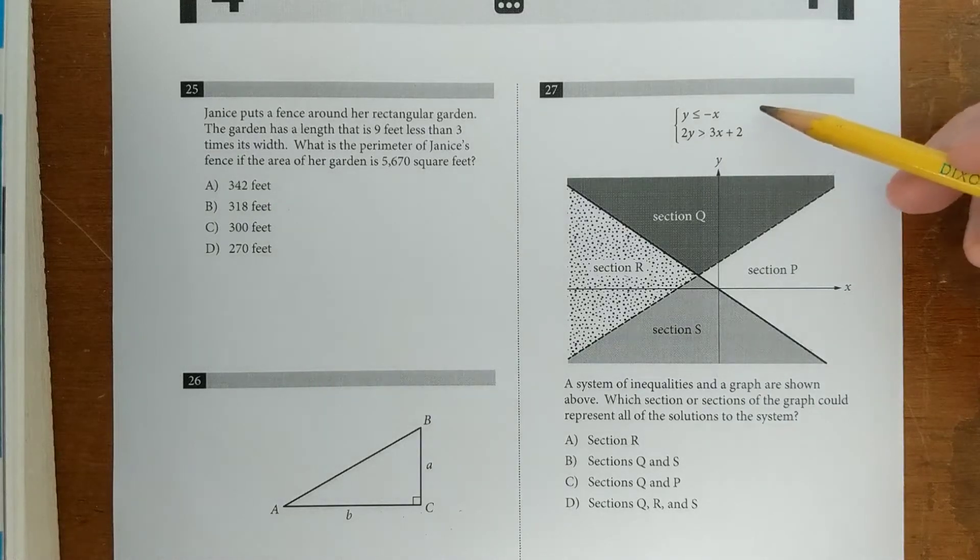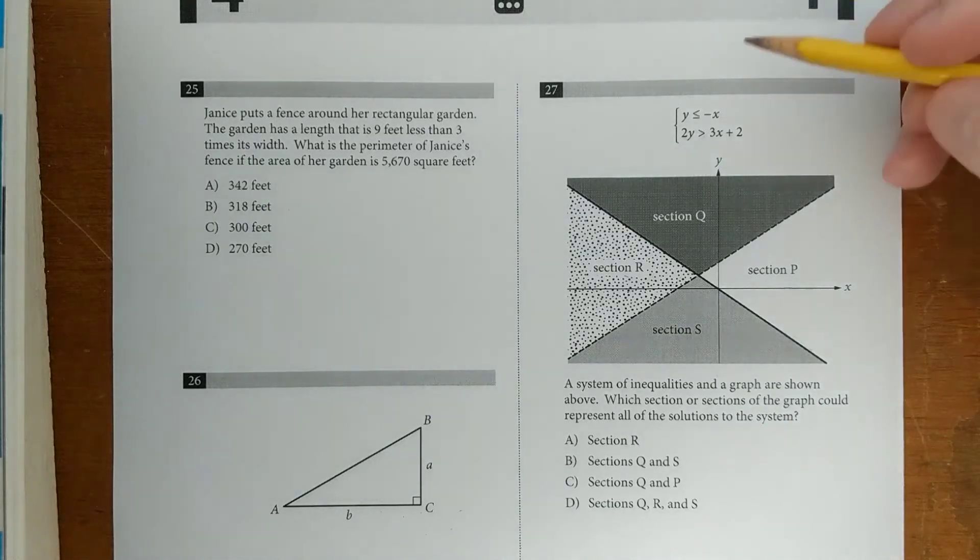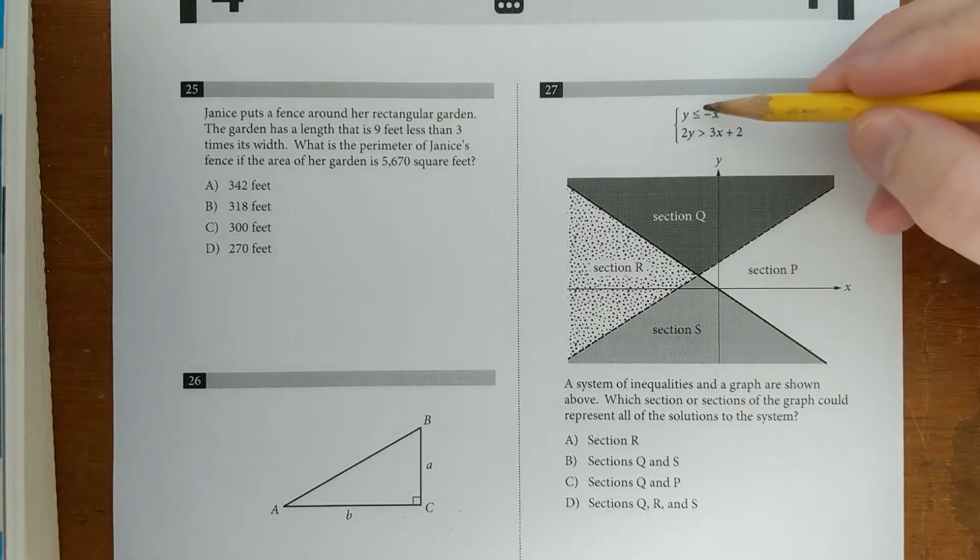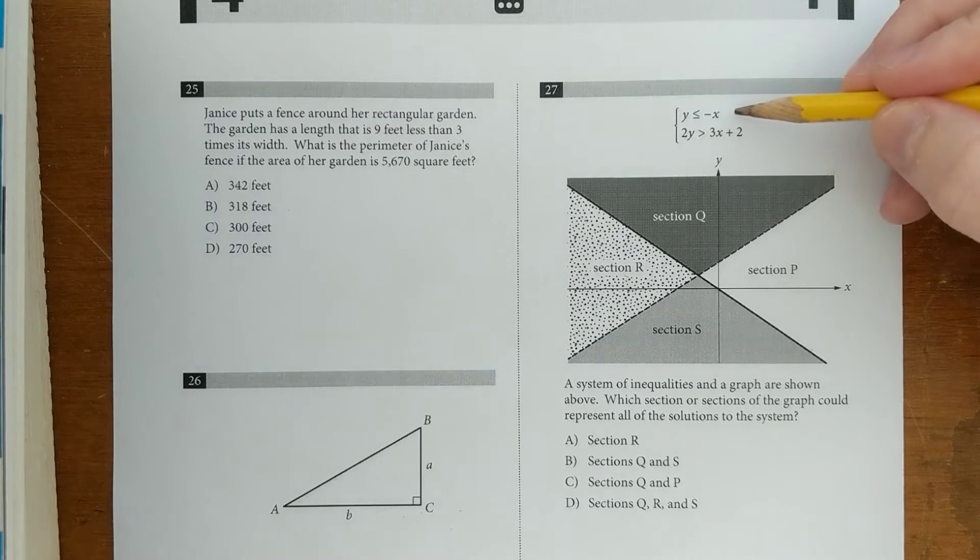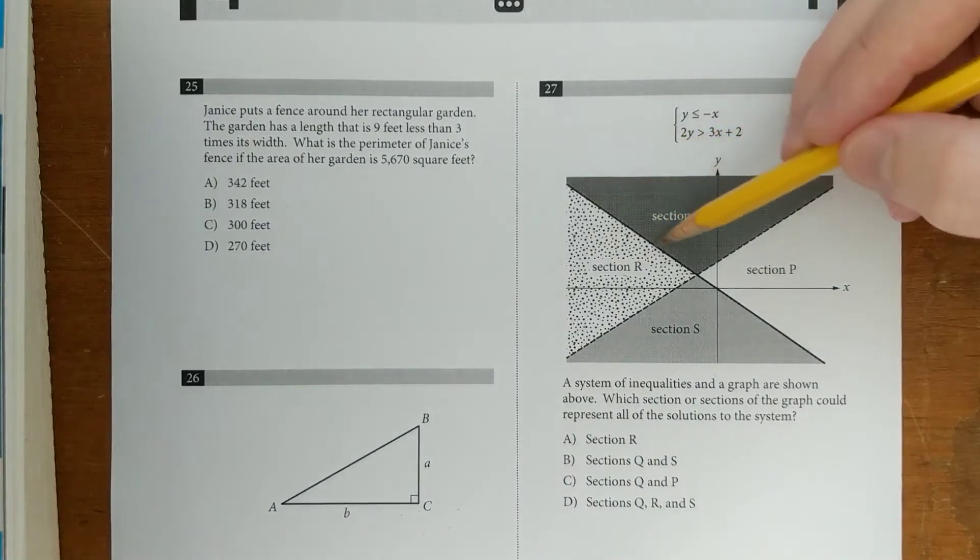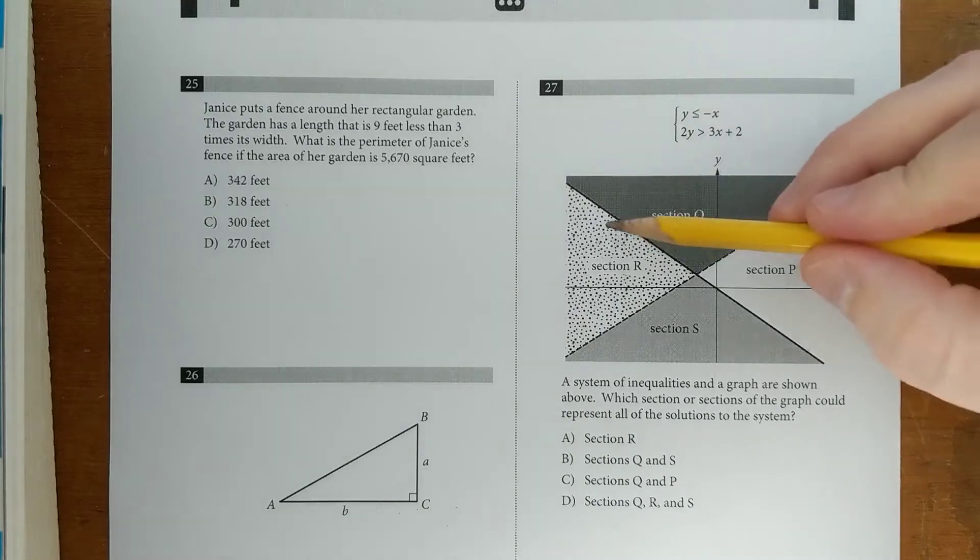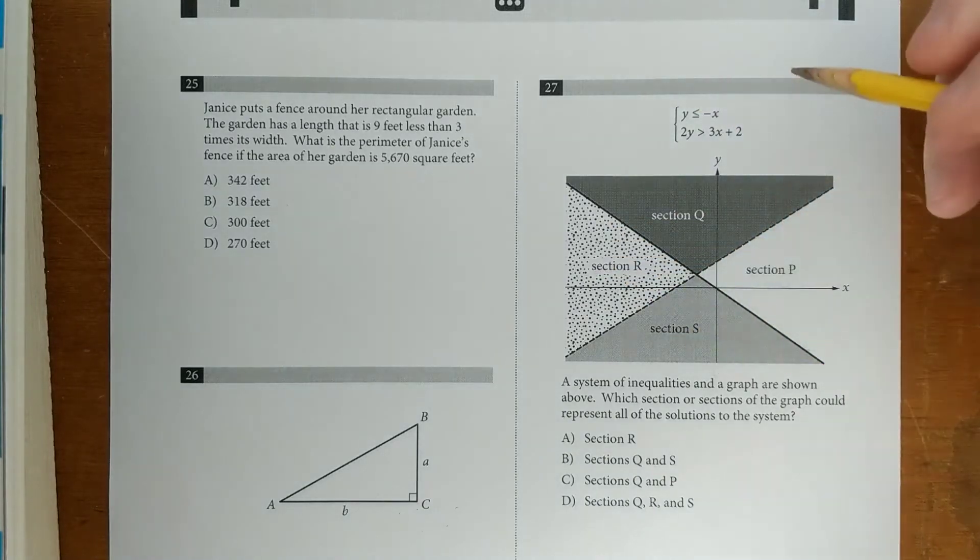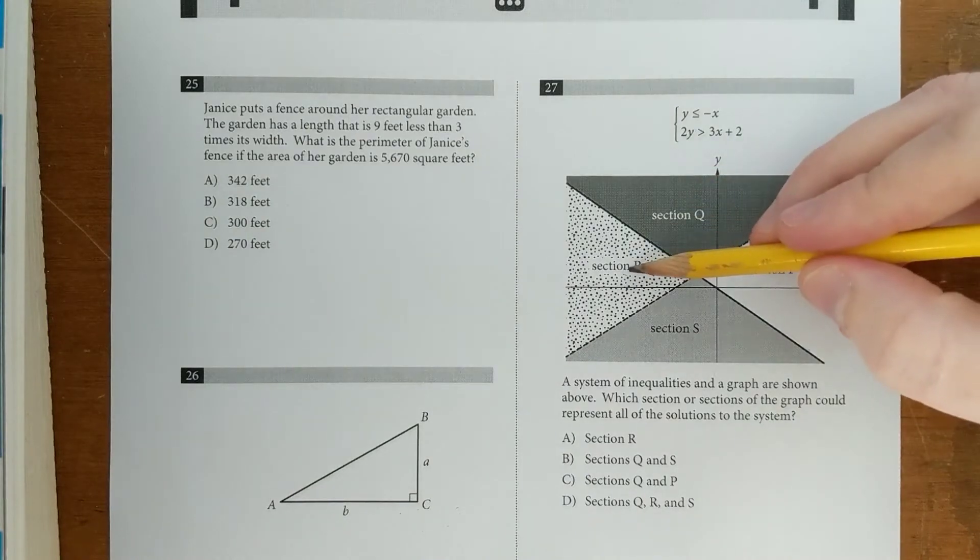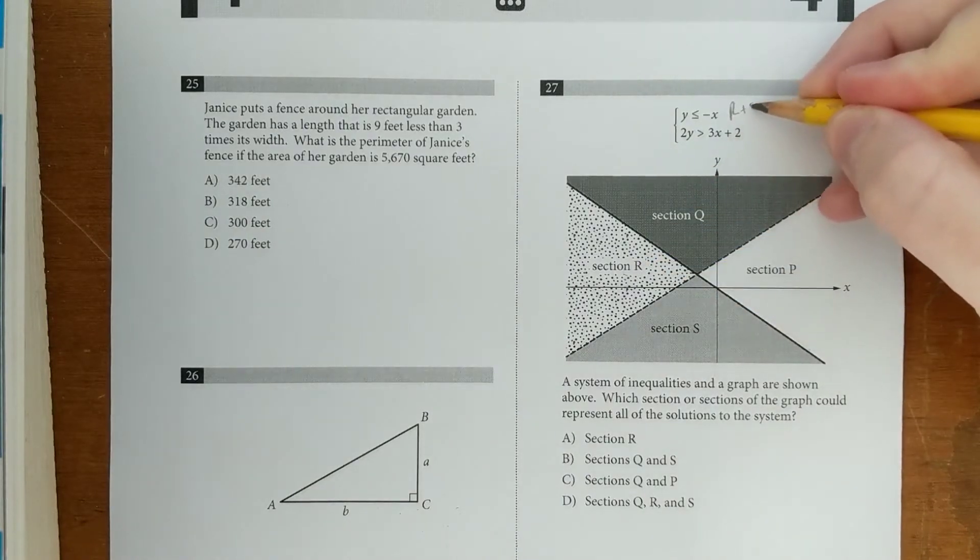This one wants to know the solution to this system of inequalities. We're going to take one inequality at a time. So y is less than or equal to negative x. That's got a slope of negative 1 and a y-intercept of 0. That means it's this line. And if you have y is less than something or y is less than or equal to something, it's always going to be shaded below. So that means we're talking about sections R and S for this one.